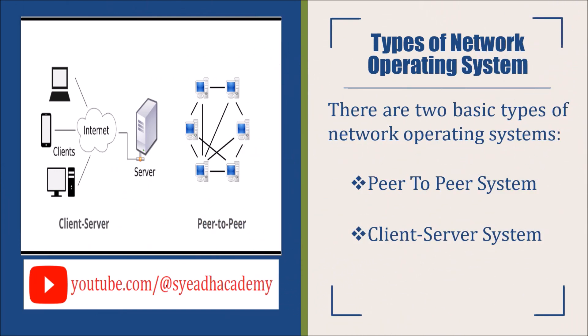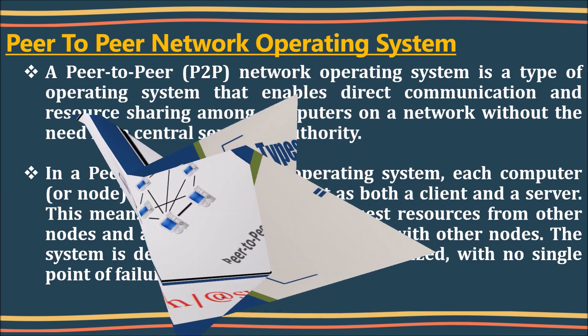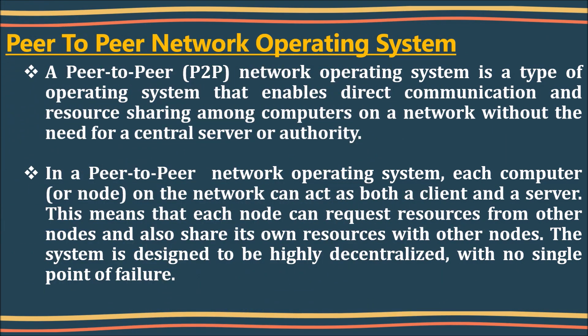Types of Network Operating System: There are two basic types of network operating systems. 1. Peer-to-Peer System: A peer-to-peer network operating system is a type of operating system that enables direct communication and resource sharing among computers on a network without the need for a central server or authority.